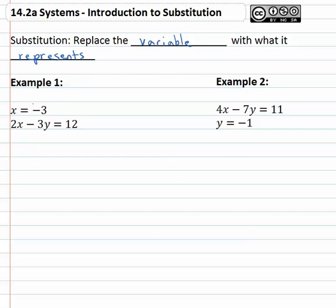Well we already know that the variable x is equal to negative three, and so when I look at the other equation and I see an x, I can replace that x with what it represents. Two x now becomes two times negative three minus three y equals twelve.